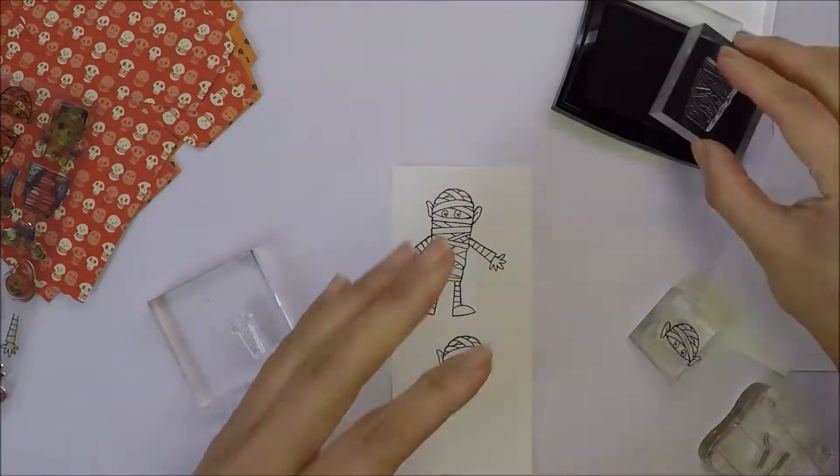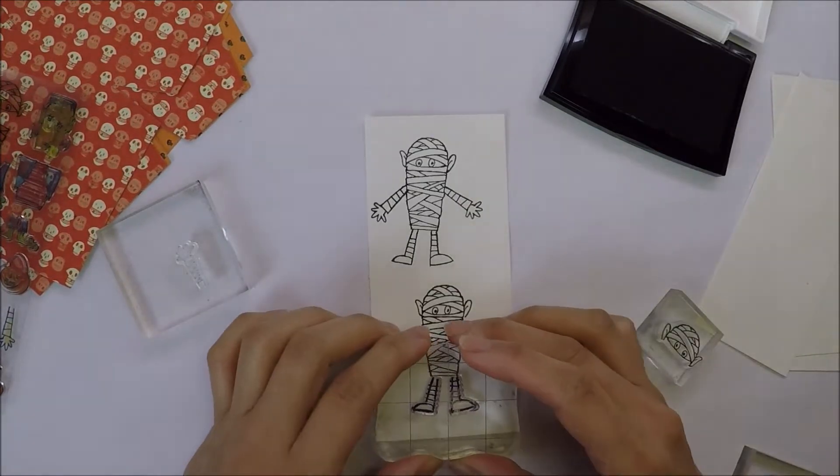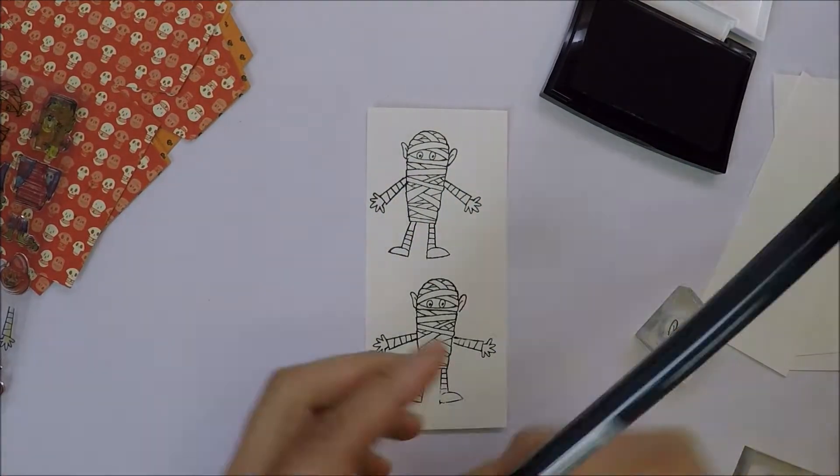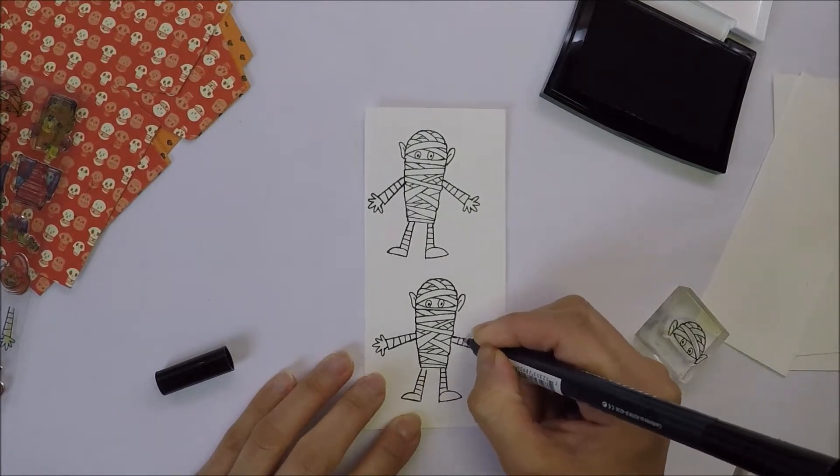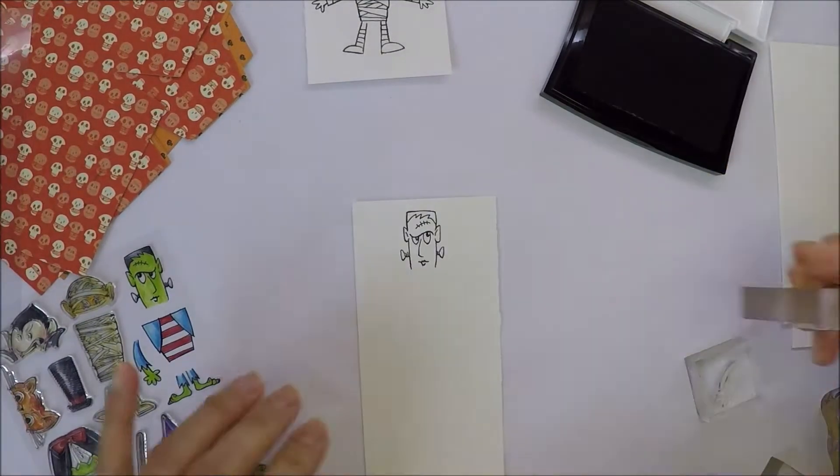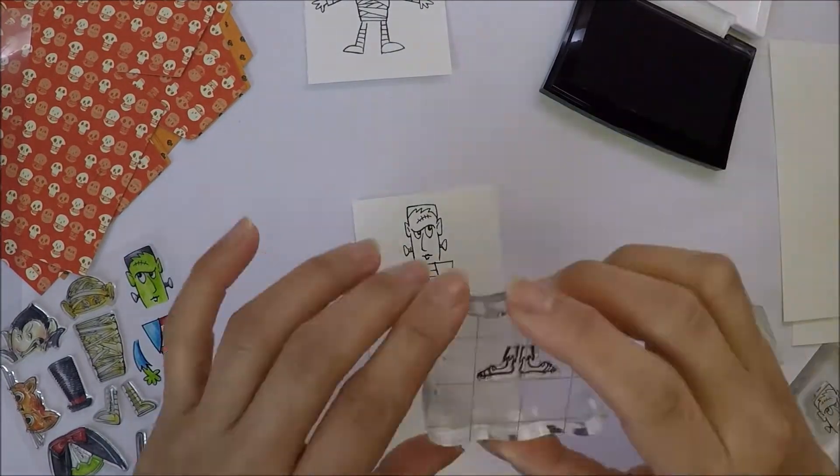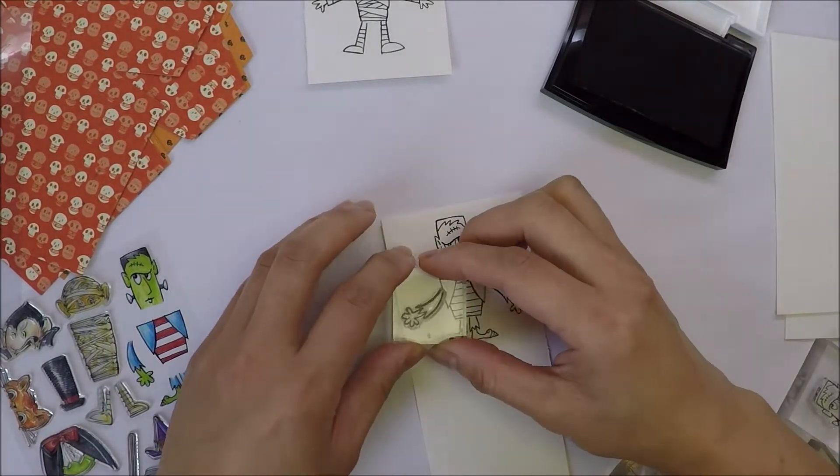I pull out my scraps of 90 pound Stratmore watercolor paper. I will use it for my images today. I use Versafine onyx black ink and stamped my images twice on the paper. I also use my memento black marker to connect the lines on the images or go over the lines that didn't stamp well.